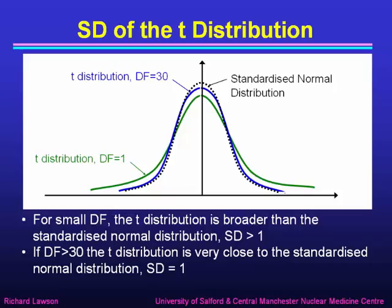For large degrees of freedom, we can use the normal distribution instead of the t-distribution, as they're very close to each other. The t-distribution can be calculated in Excel using the function TDIST. That's all I need to say about the student's t-distribution, and that brings us to an end of the fifth part of this lecture on probability distributions. Thank you.